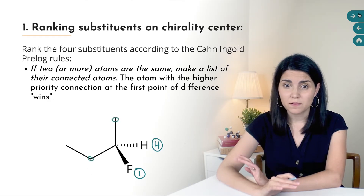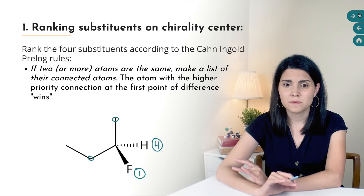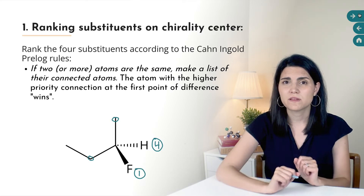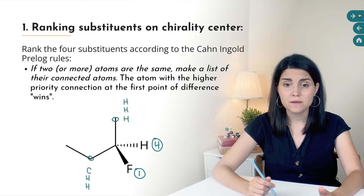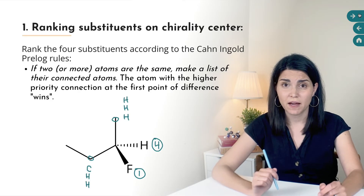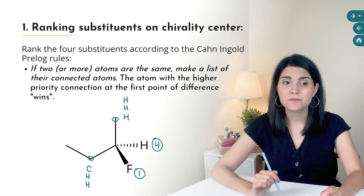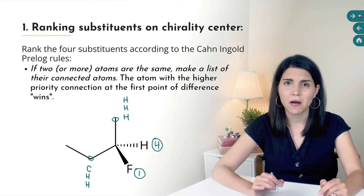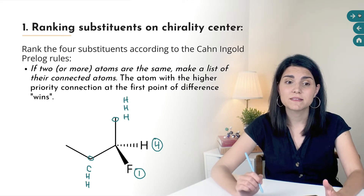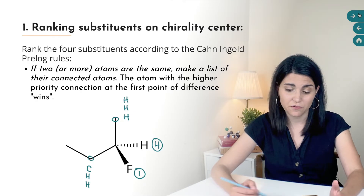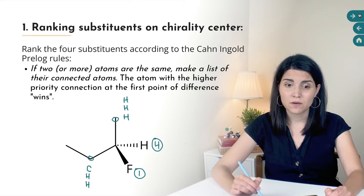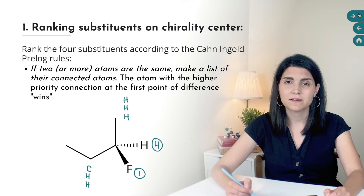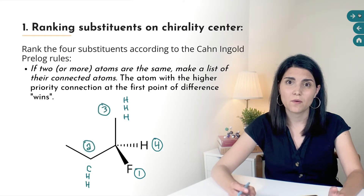When we have two of the same atom, we write out a list of all the connected atoms for each one being compared, in order from highest atomic number to lowest. For the methyl group carbon, the connected atoms are H, H, H. For the ethyl group carbon, it's C, H, H. We go down both lists until we find the first point of difference — here it's just the first atom. Carbon ranks higher than hydrogen, so the ethyl group carbon ranks higher than the methyl, giving ethyl priority two and methyl priority three.